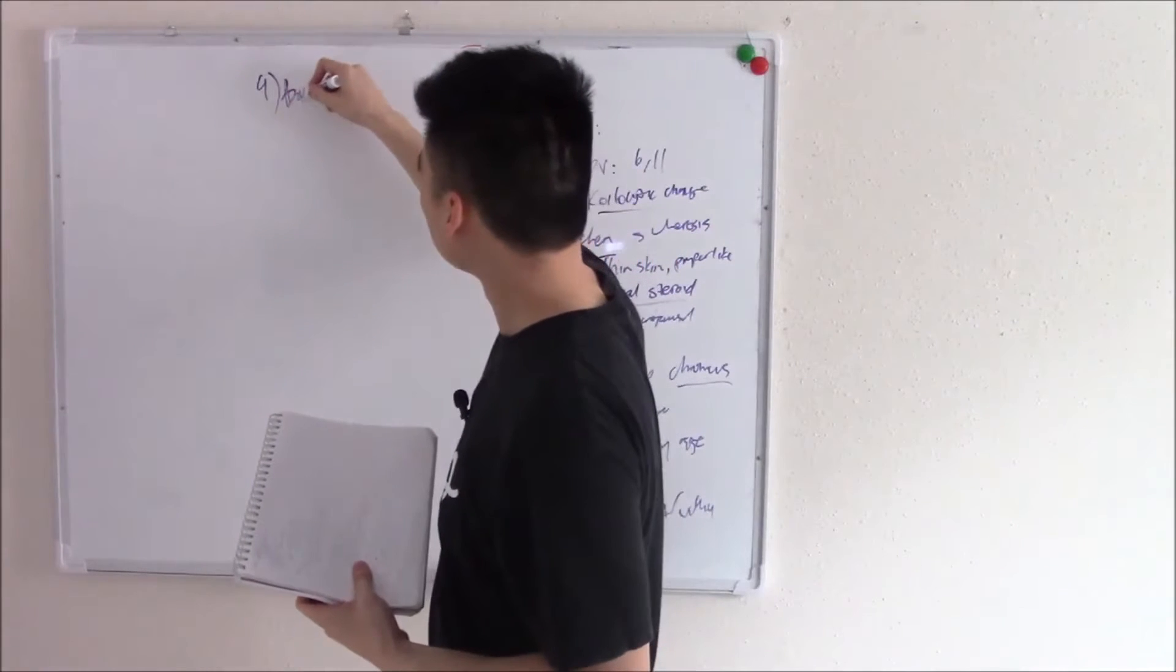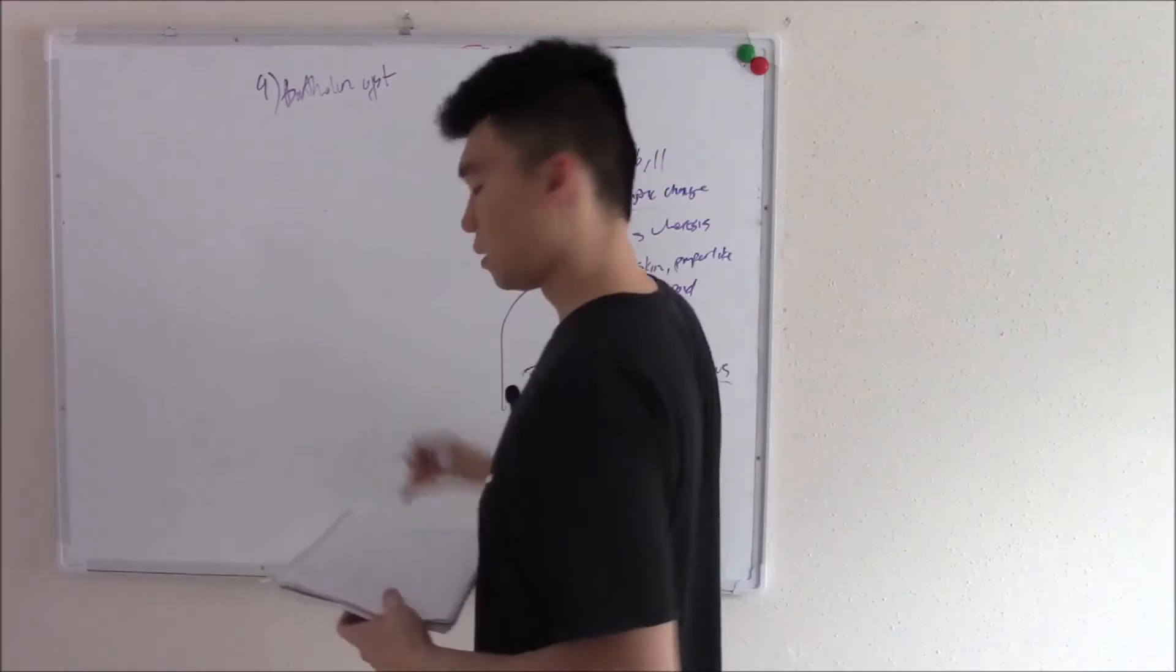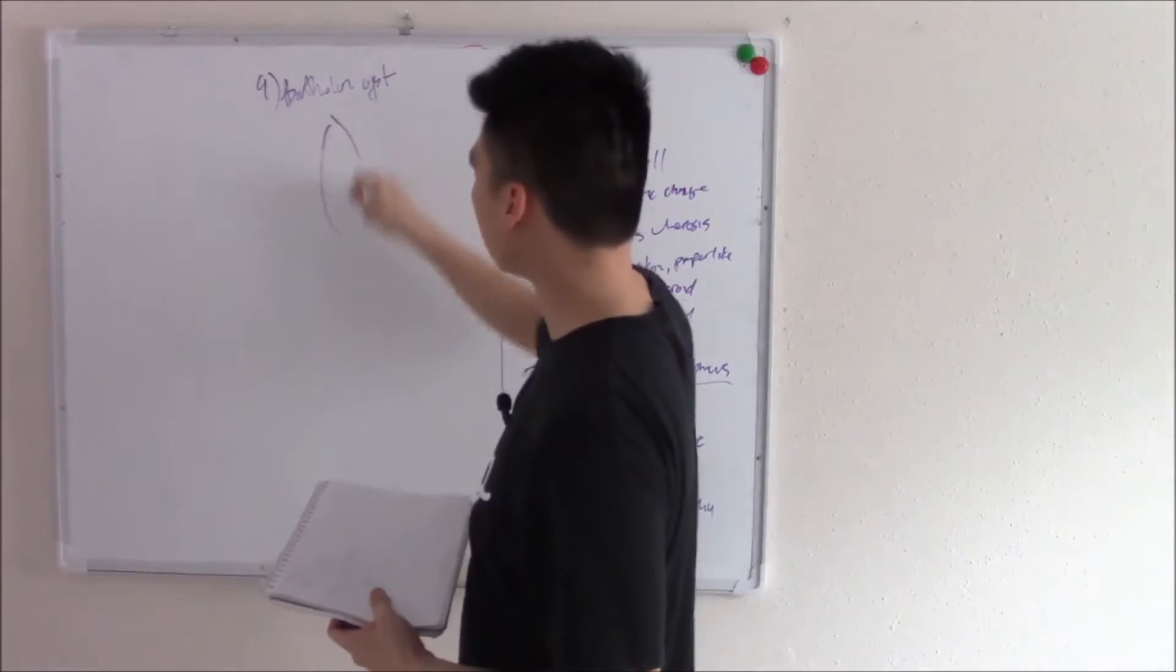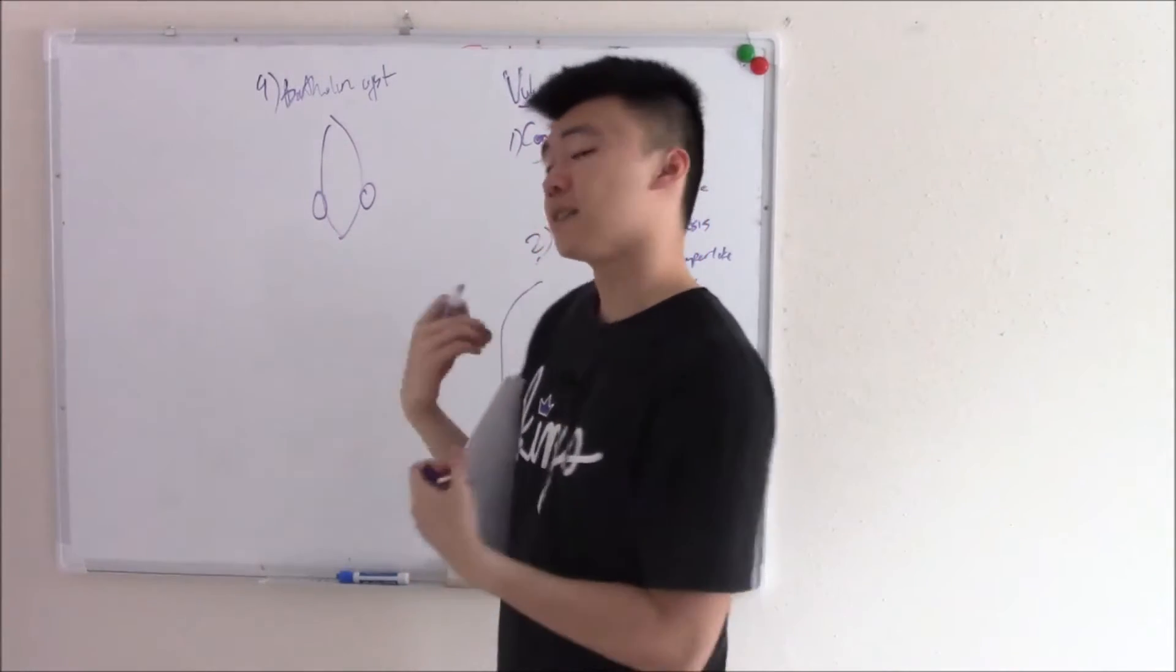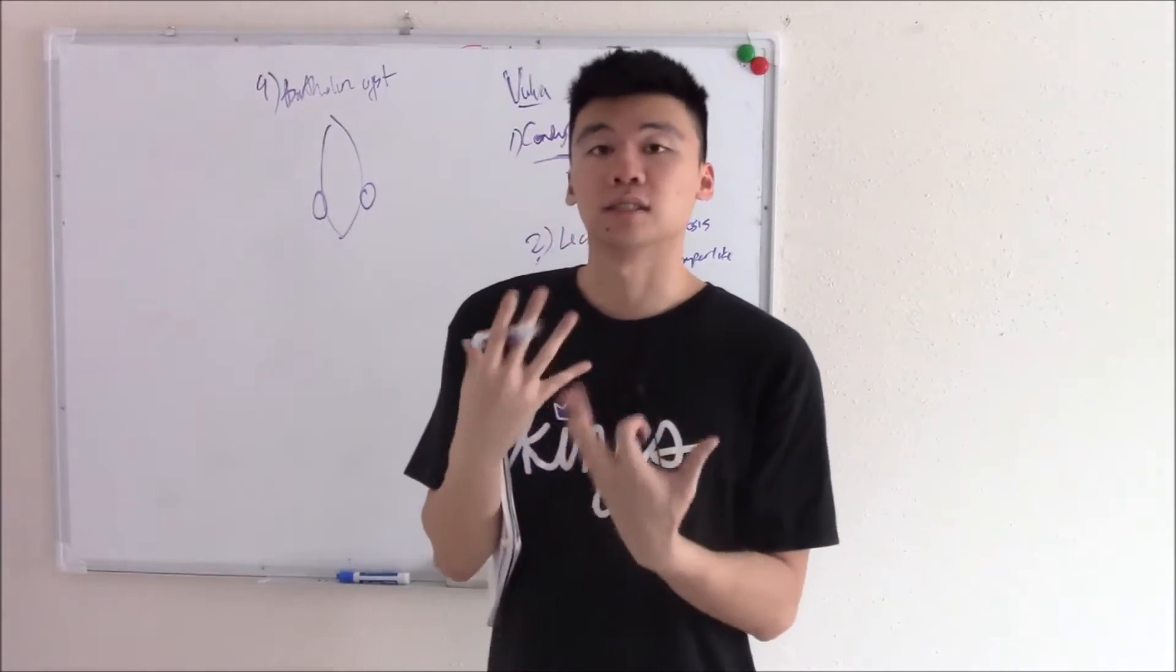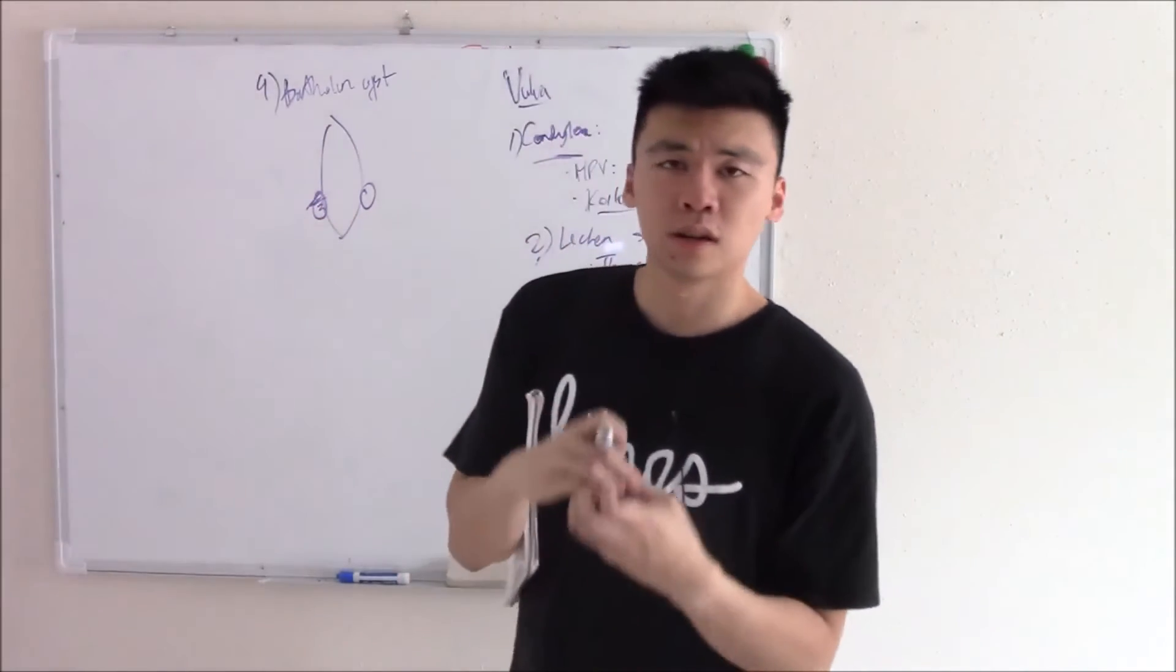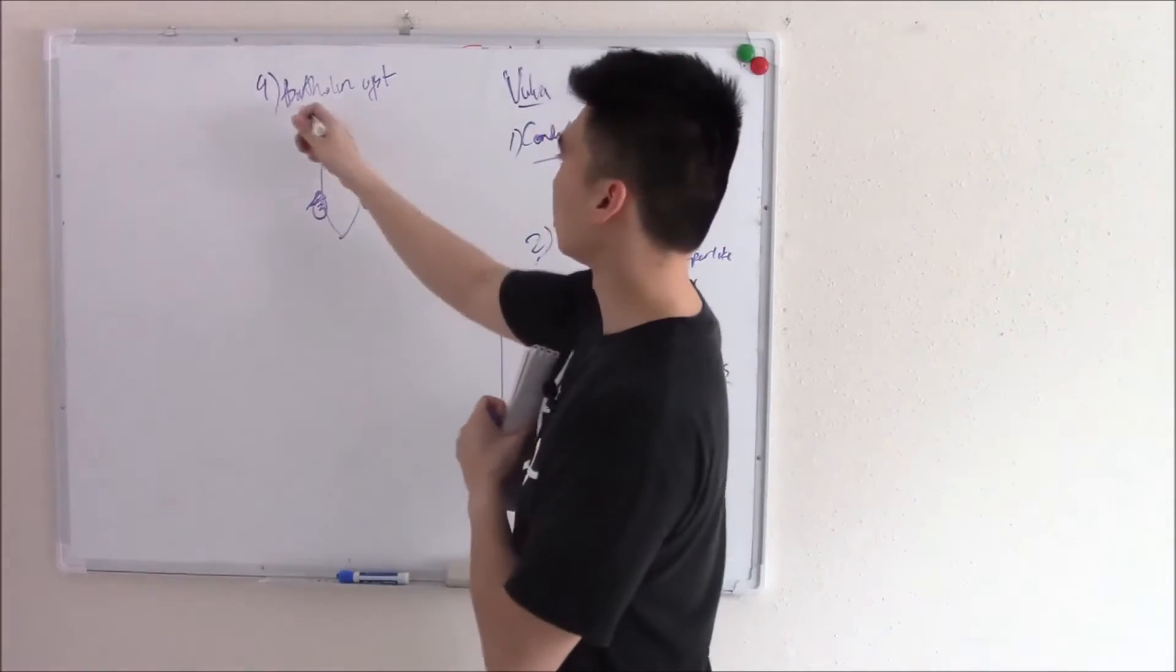Next is Bartholin cyst. Bartholin cysts come from Bartholin ducts. If this is the outside of your vagina, your Bartholin glands make lubrication for your vagina. And if that duct gets blocked, you can have a cyst. So you have a swelling, very painful, very large cyst. Easy to identify.